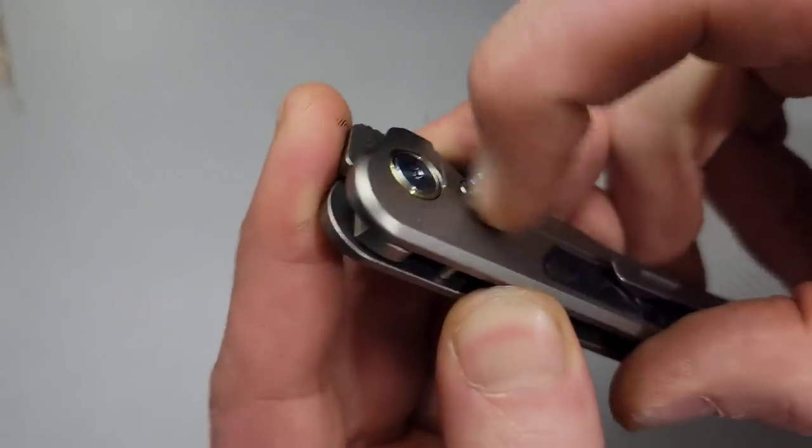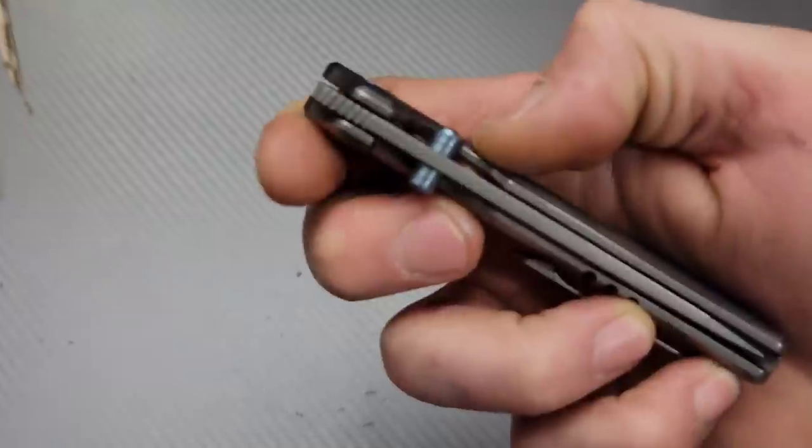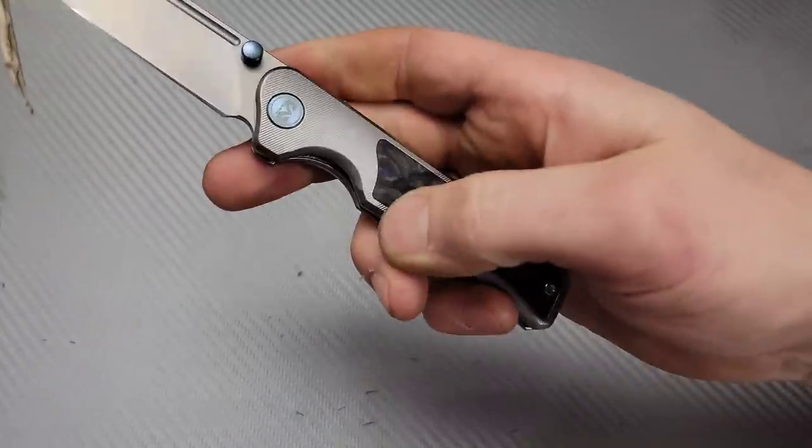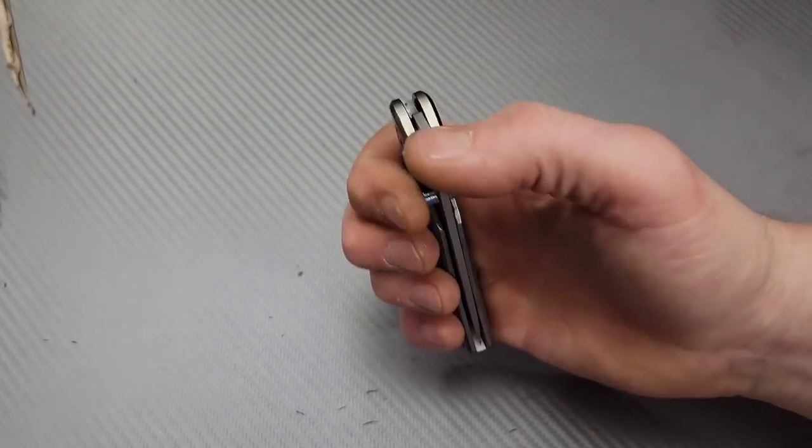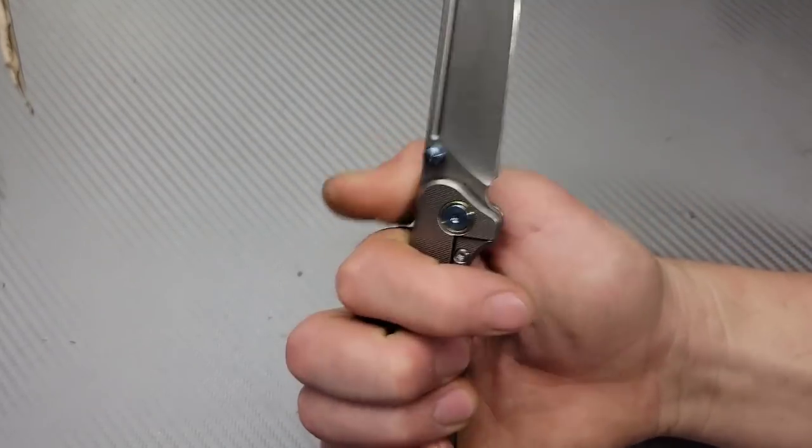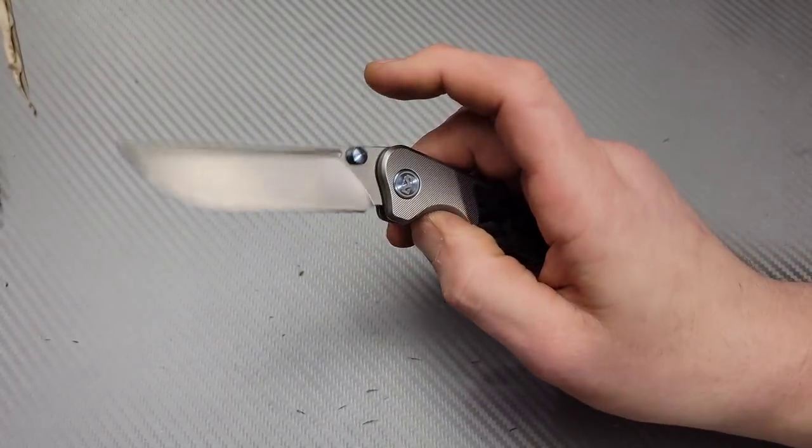I really like this texture. It's very grippy and feels really good in the hand. The thumb studs are very smooth but easy to deploy. Access to the lock bar is very nice. It is on ceramic cage bearings and it is very smooth. You do have a front flipping action so you have multiple ways of deployment. Easy to reverse flick.